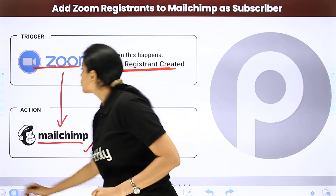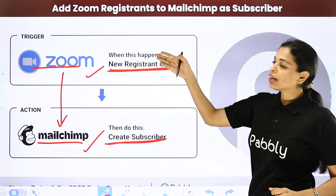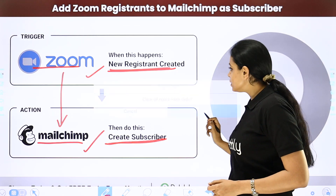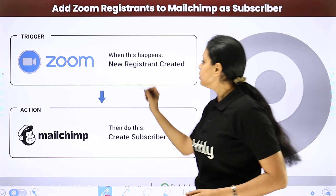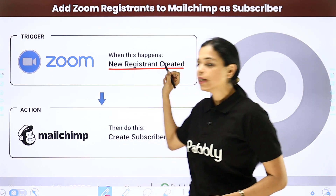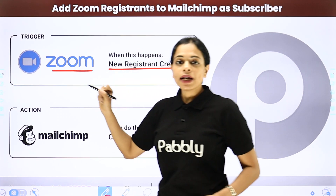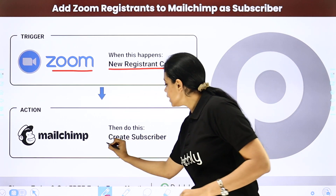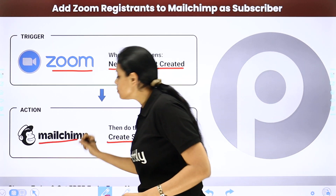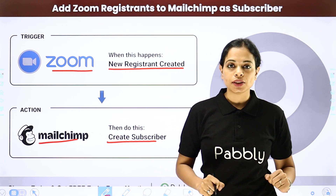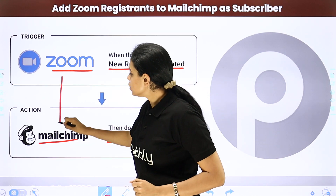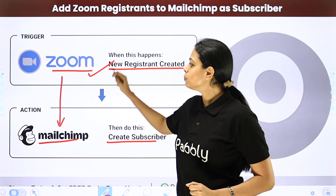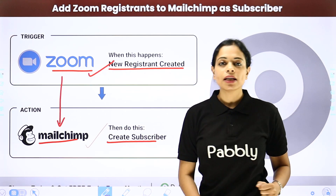Let's check out another example: adding Zoom registrants to Mailchimp as subscribers. Every time a new registrant is created in Zoom, you automatically have the user's details, and you want to create a subscriber in Mailchimp, which is an email marketing tool. Again, integrate the two applications with Pably Connect — your trigger application would be Zoom and your action application would be Mailchimp.